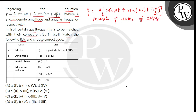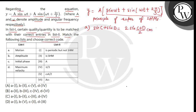यहां a amplitude and omega angular frequency है। Entry a में find करना है कि what will be the nature of the motion. इसके लिए हम bracket term में trigonometry formula apply करेंगे — that is sin C plus sin D, जो equal to होगा 2 sin of (C plus D) by 2, cos of (C minus D) by 2. इसको मान लेते हैं equation number 1.